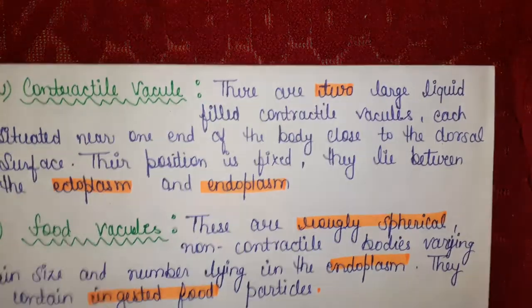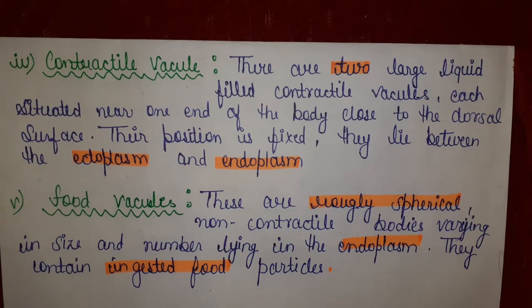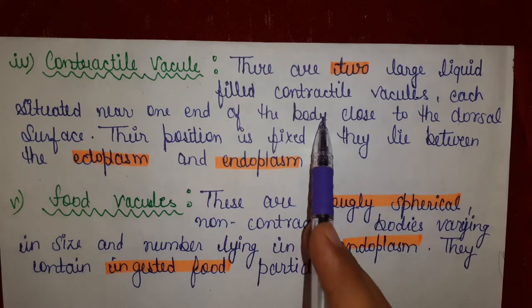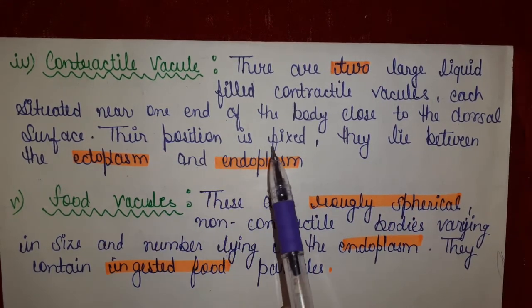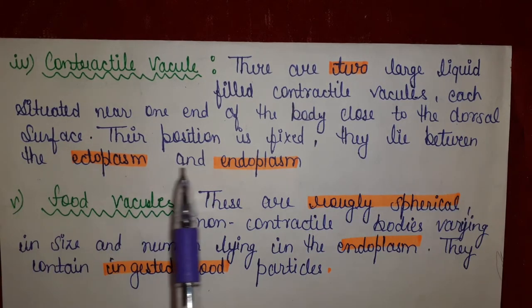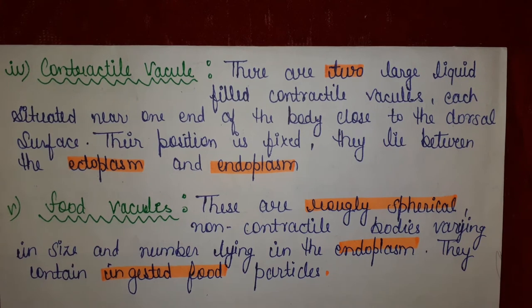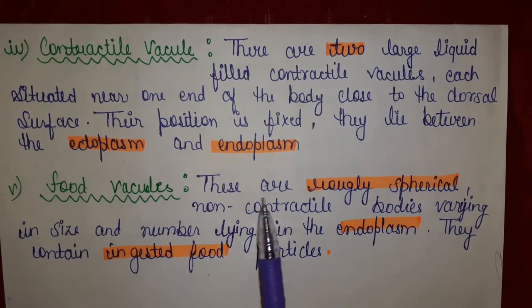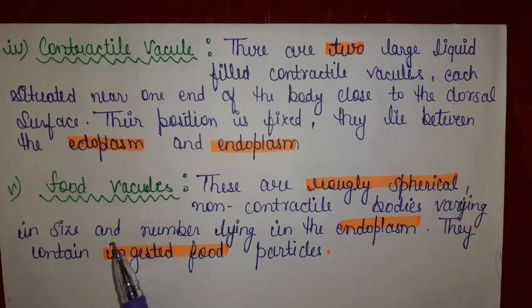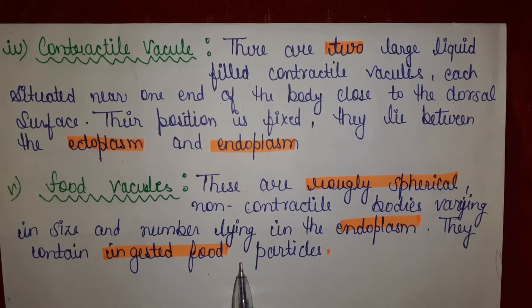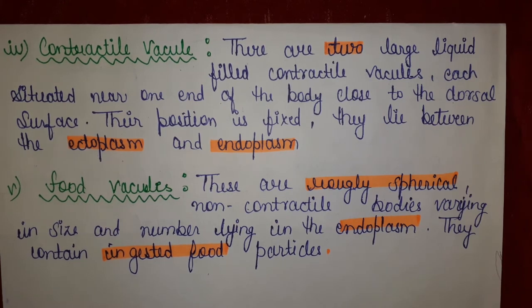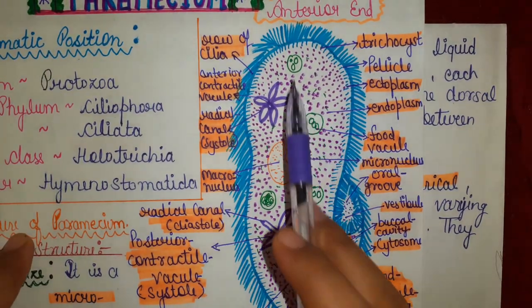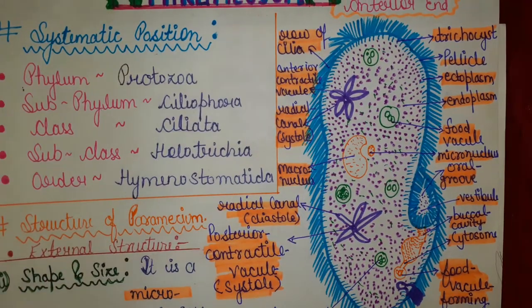Now, contractile vacuole. There are two large liquid-filled contractile vacuoles, each situated near one end of the body, close to the dorsal surface. Their position is fixed; they lie between the ectoplasm and endoplasm. Next, food vacuoles. These are roughly spherical, non-contractile bodies varying in size and number, lying in the endoplasm. They contain ingested food particles. As you can see in this diagram, these small circular structures are our food vacuoles.